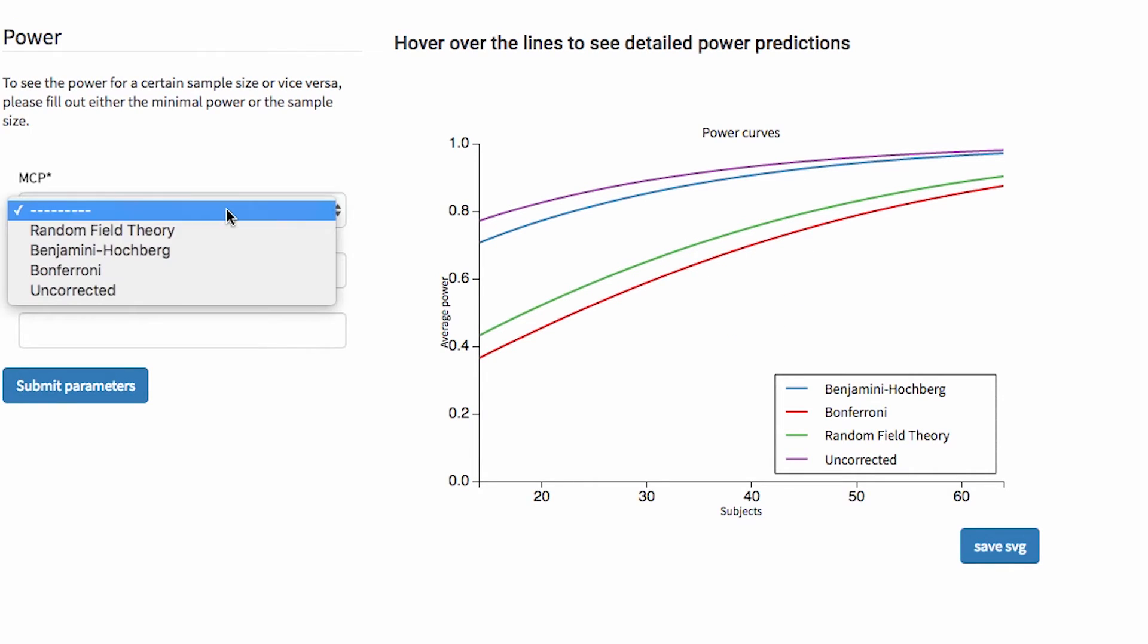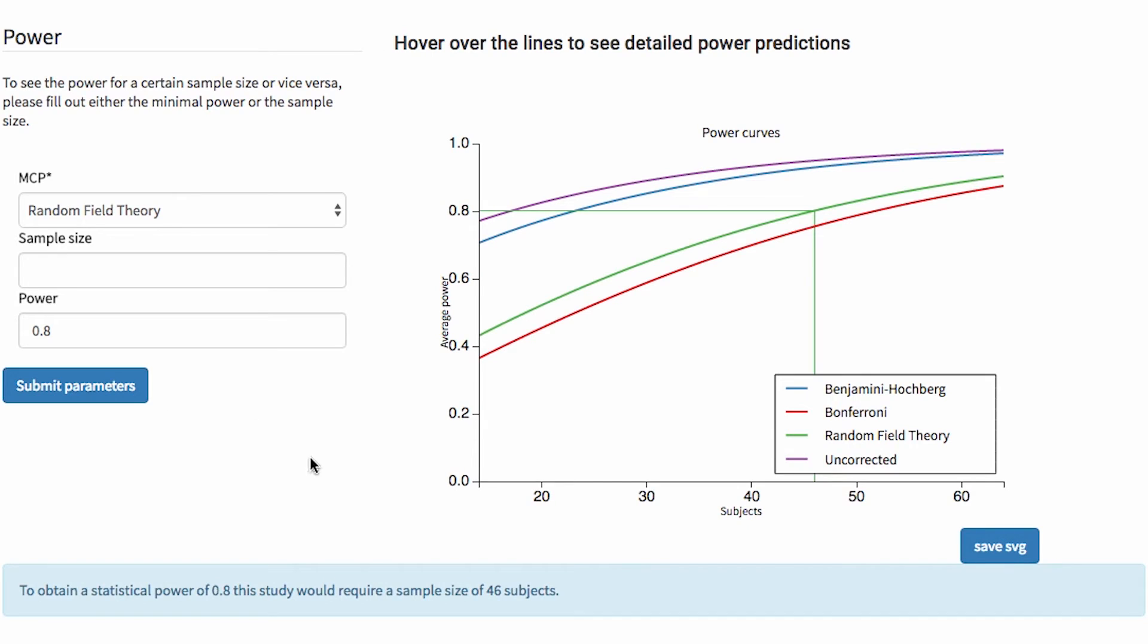So, let's say that I'm planning on using a random field theory correction, cluster correction, and I want to know how many subjects I need in my sample for 80% power. I just fill in those two fields right there, submit parameters, and it will give me a very precise crosshair focusing on what sample size I'll need. So, to obtain power of 0.8, this study would require a sample size of 46 subjects. There you go.